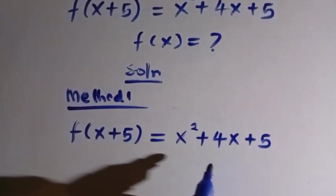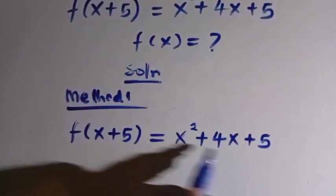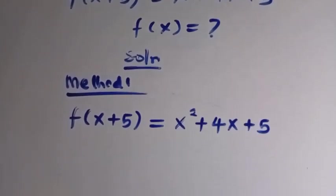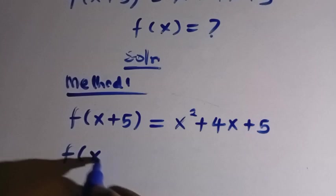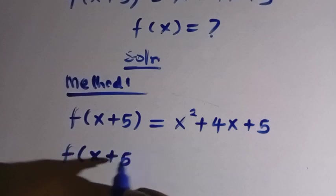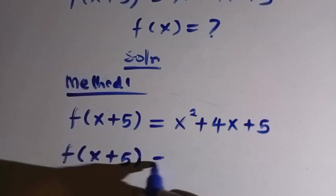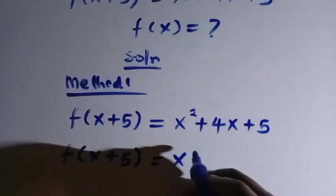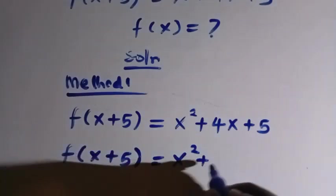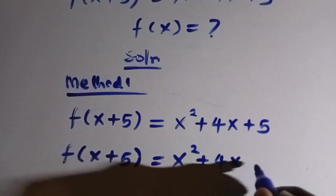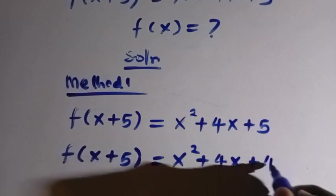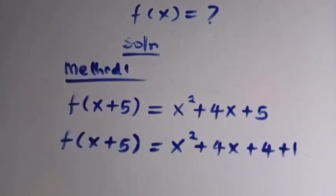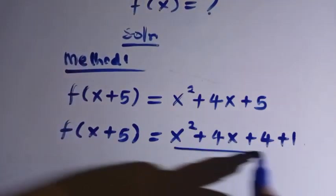This is not factorizable, so we cannot factorize this. What I'm going to do here is write f of x plus 5. Instead of x squared plus 4x plus 5, I'm going to write it as x squared plus 4x plus 4 plus 1. So this is still the same thing.